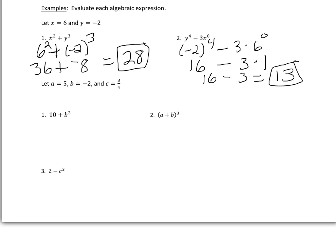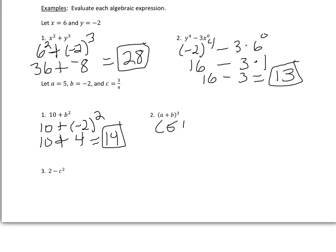Let's look at a few more examples with fractions. Here we have 10 plus b squared, which is 10 plus negative 2 squared. Do the exponent first: negative 2 times negative 2 is positive 4, and 10 plus 4 is 14. Next, for a plus b raised to the third power, substituting gives 5 plus negative 2 raised to the third power. We must do what's inside the parentheses first: 5 plus negative 2 is positive 3. Then 3 to the third power: 3 times 3 is 9, times another 3 is 27.